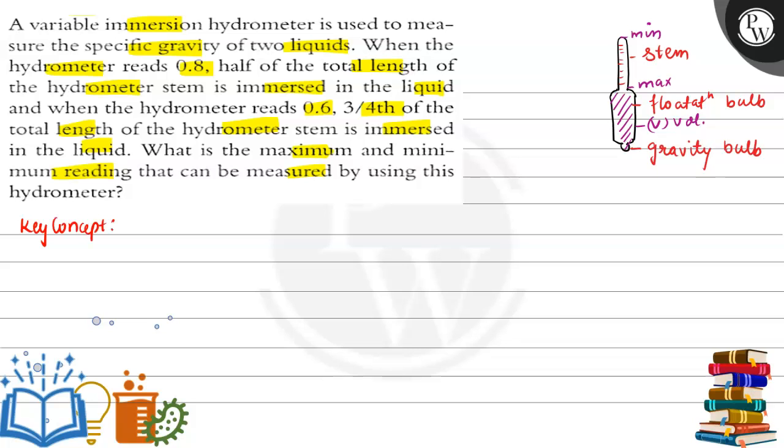For this question, here volume of flotation bulb plus gravity bulb, this is equal to V and the rest of the volume, that means the length of the stem will be immersed in the water. It will be considered according to it.